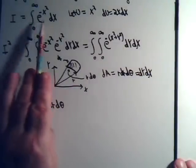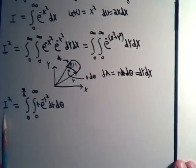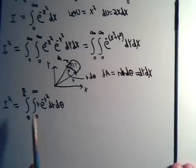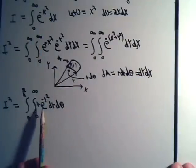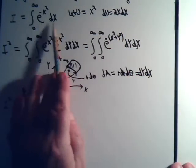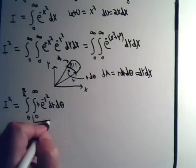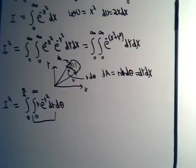Before, we had I in the original form and could not solve it with u-substitution. Now, written in polar coordinates, we have e to the minus r squared with r dr in the integrand. This is a double integral and the inner integral — the one involving e to the minus r squared times r dr — we should now be able to solve.